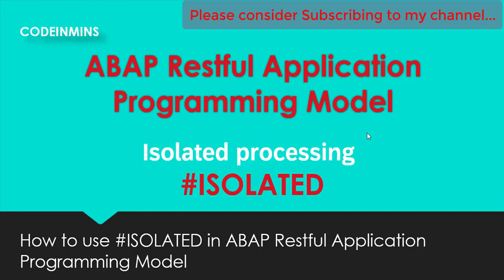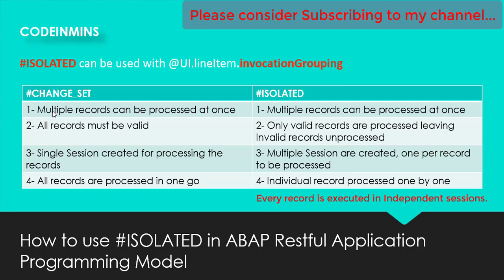Both #isolated and #changeSet can be used with UI annotations, for example UI line item or other annotations as seen in the previous video. The similarities: both can process multiple records at once. The difference: with change set, all records must be valid — there should be no invalid records or records in the failed structure. With isolated, only valid records are processed, leaving invalid records unprocessed.